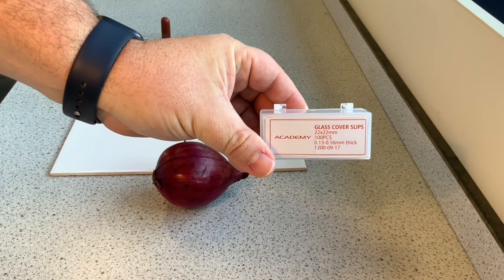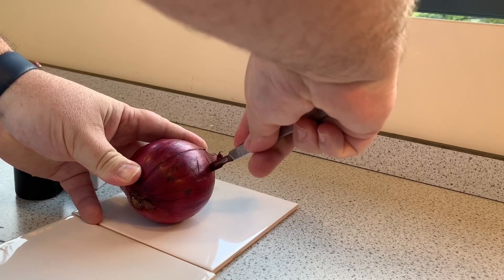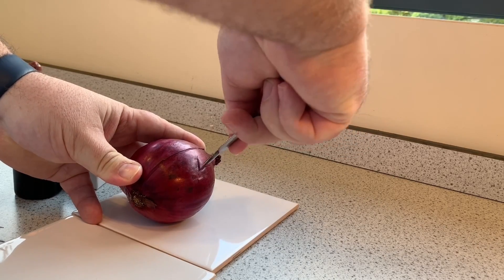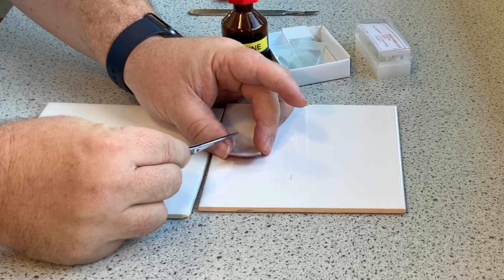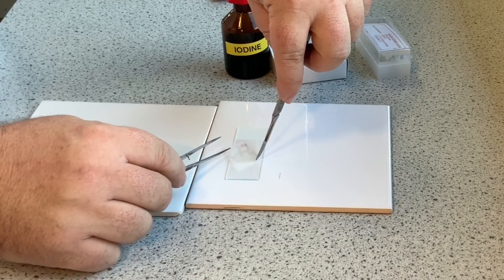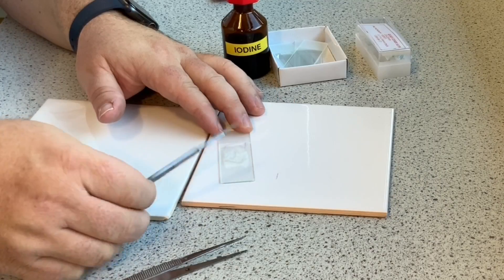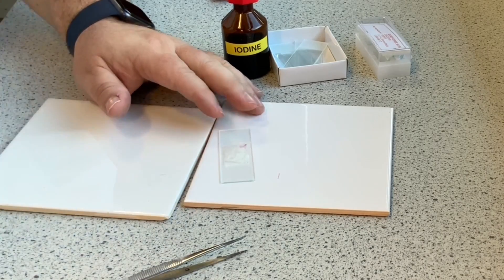You'll also need to use glass cover slips to put on top of your specimen. Using a scalpel, carefully cut a section out of your onion skin. Once you've got a piece of onion skin, using a pair of tweezers, gently pull away a sheet of onion cells. Gently smooth the sheet of onion cells onto the slide, being careful not to get fingerprints all over the slide.